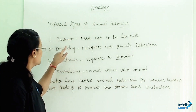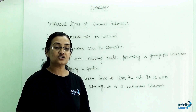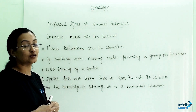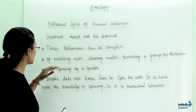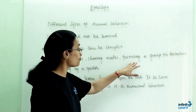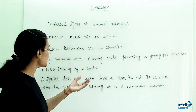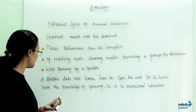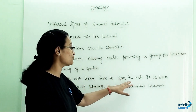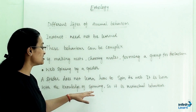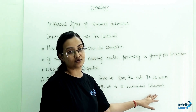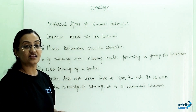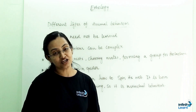Let us start with instinct behavior. Animals do not need to learn this behavior — they know it by birth. This behavior can be complex, like making nests, choosing mates or forming a group for protection. For example, web spinning by a spider: a spider does not learn how to spin its web; it is born with the knowledge of spinning. This is known as instinctual behavior.